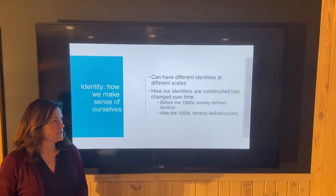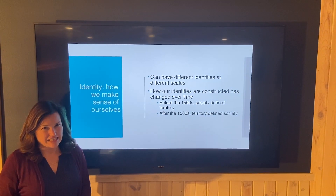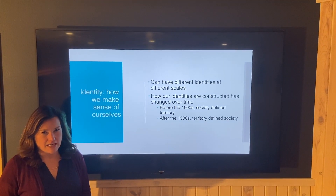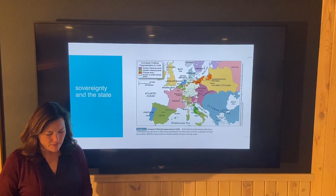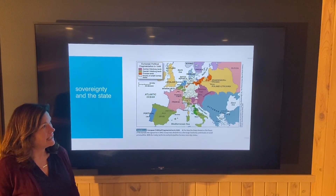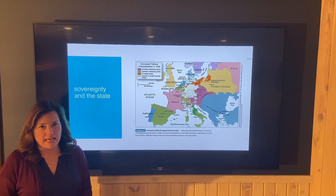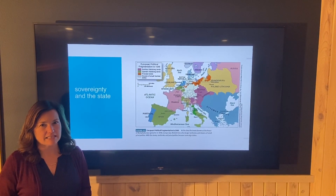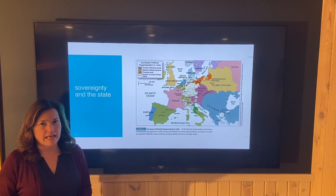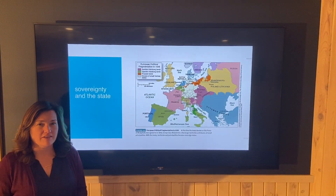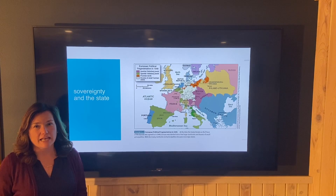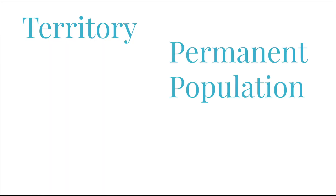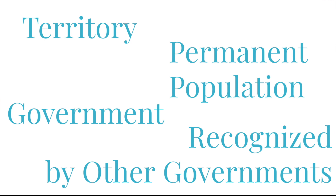The concept of the state brought in the new identity of the nation and intensified that identity. So let's talk about the concept of the state. The state is fundamentally a territory. In international law, the state is an entity defined by the Treaty of Montevideo in 1933 as having four things: a territory, a permanent population, a government, and the ability to enter into relations with other states — which means it's recognized by other states.